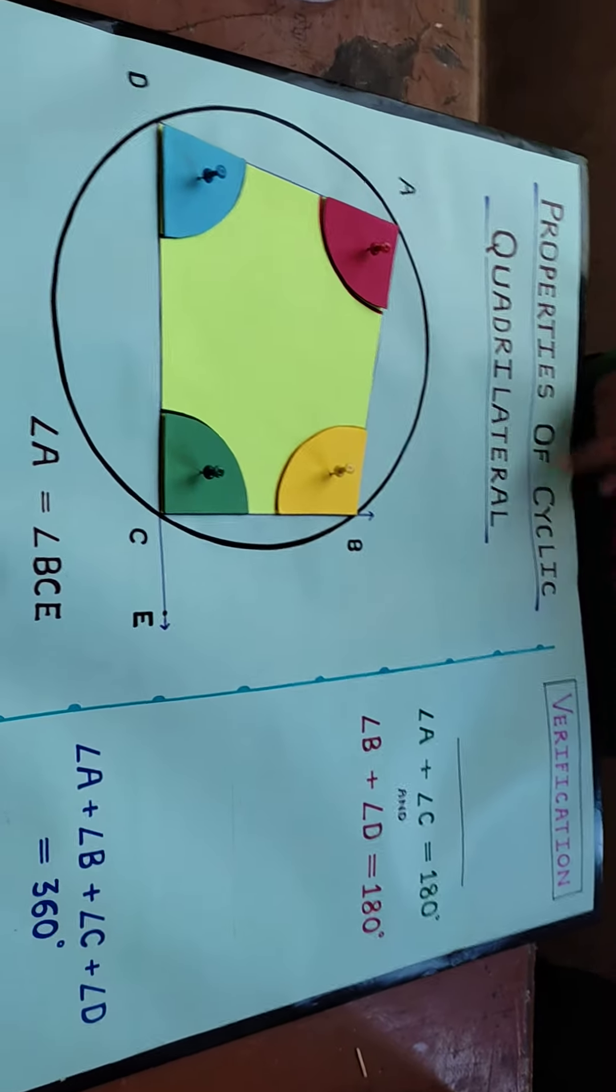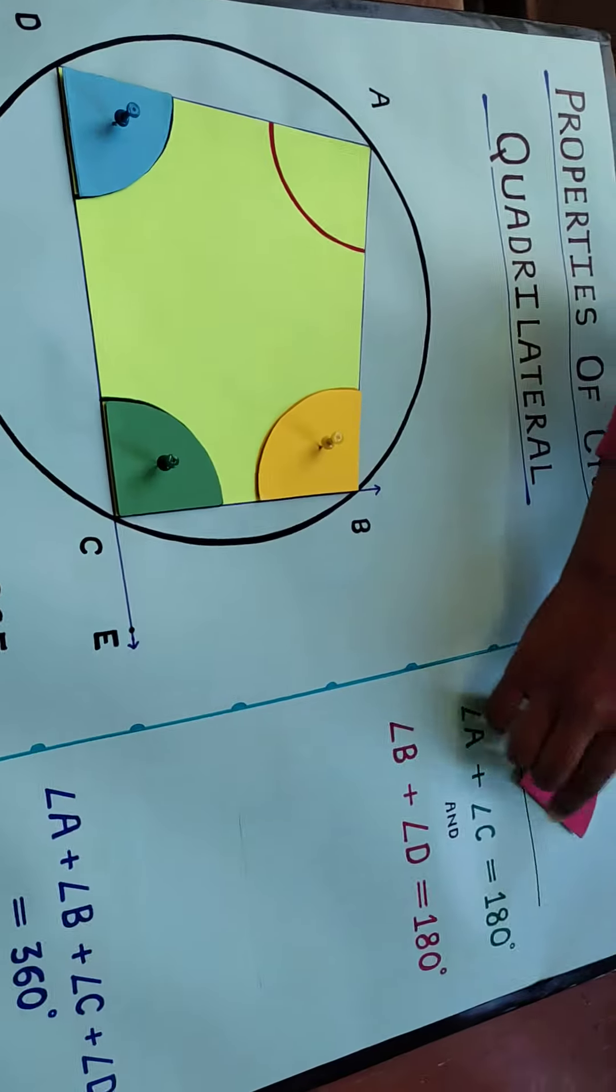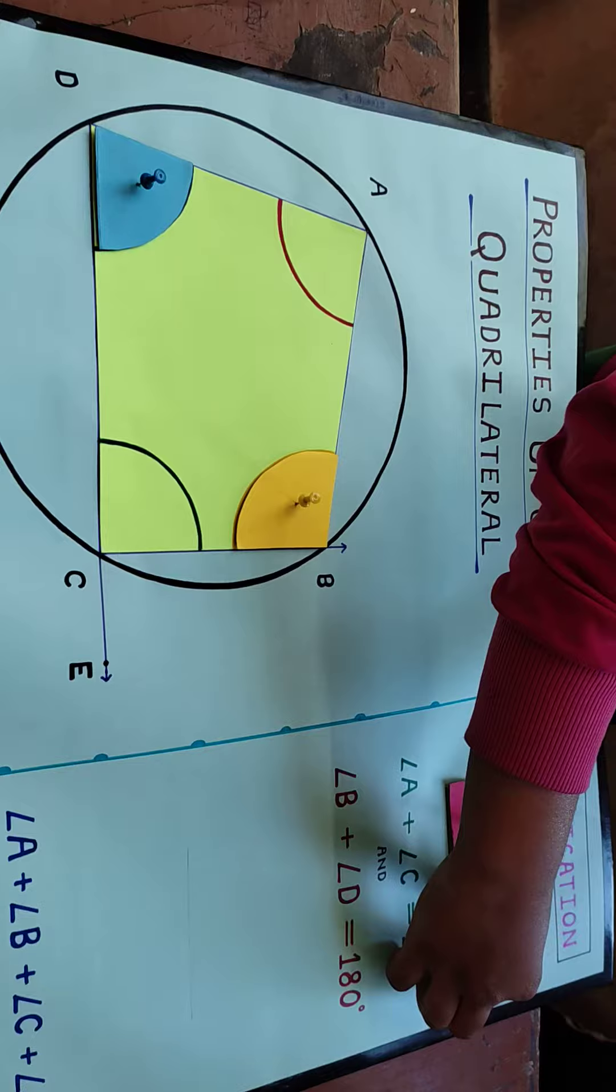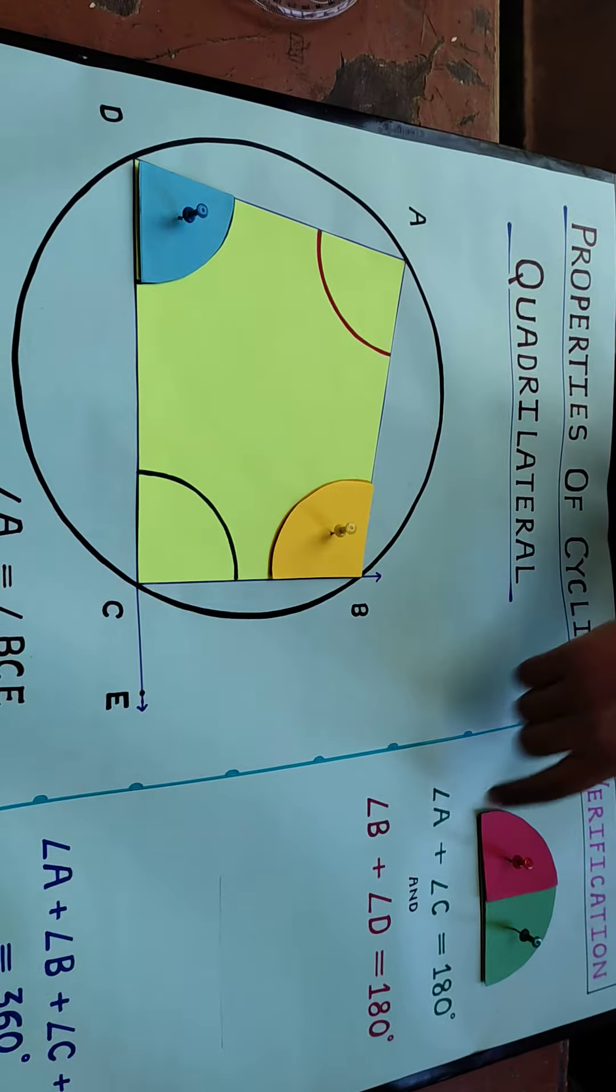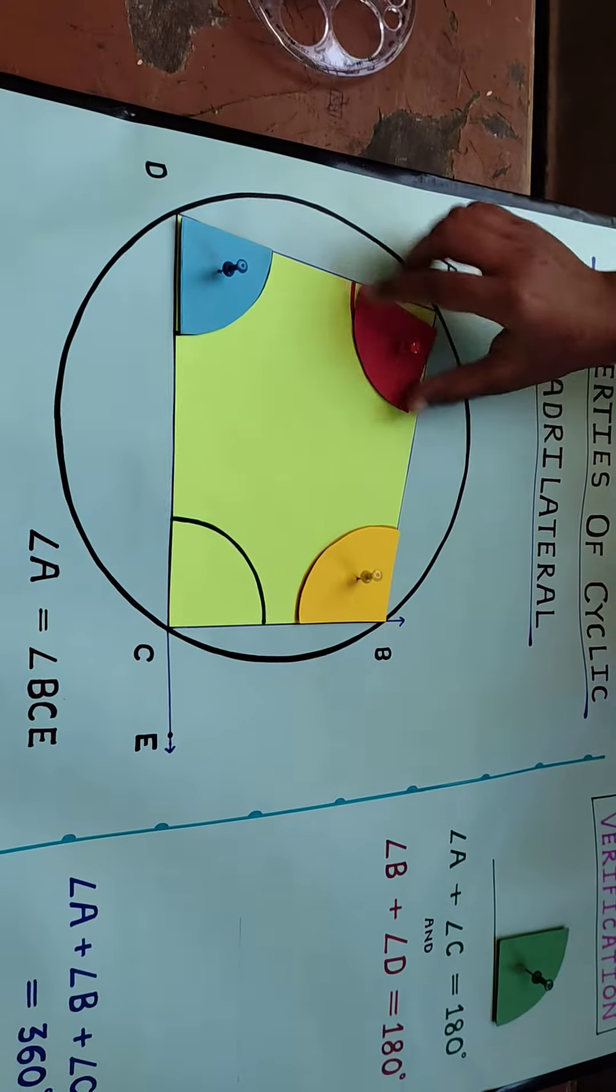The first property of cyclic quadrilaterals says that opposite angles add up to 180 degrees. By putting replicas, we can show it here. Here we see that they form a linear pair, which means angle A plus angle C equals 180 degrees. Similarly,